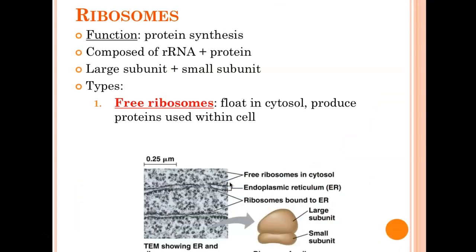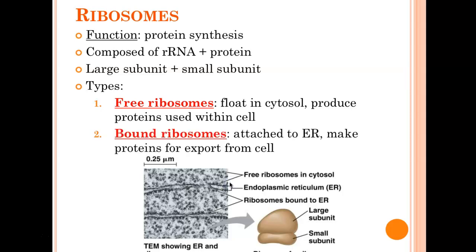Ribosomes — the job of ribosomes is to make proteins. Free ribosomes are going to make proteins for the cell that they are in. Bound ribosomes are going to make proteins for export, meaning they're going to be packaged in a vesicle and fused with the cell membrane. A bound ribosome could also make proteins for the cell's own membrane — the protein gets made in the rough ER, packaged into a vesicle, goes to the Golgi, gets processed, then the vesicle fuses with the membrane and deposits the protein into that cell's membrane. People listening to this video are going to have a really good hint on the FRQ.